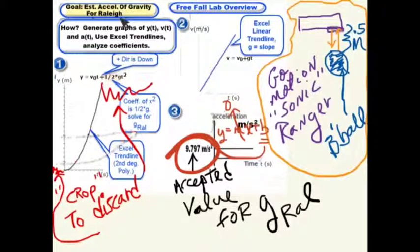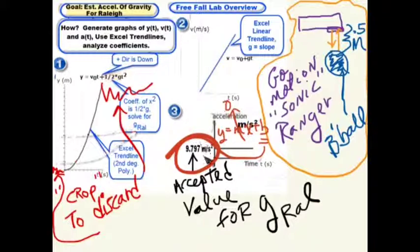The goal of the Free Fall Lab is to estimate the acceleration of gravity for Raleigh. At sea level, G is 9.80 meters per second per second. Raleigh is about 450 feet above sea level, so that drops to 9.797 meters per second per second, which is still 9.80 meters per second per second to three significant figures.